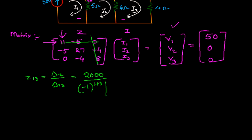Now you can write it as minus 5, 27, 0, minus 4.